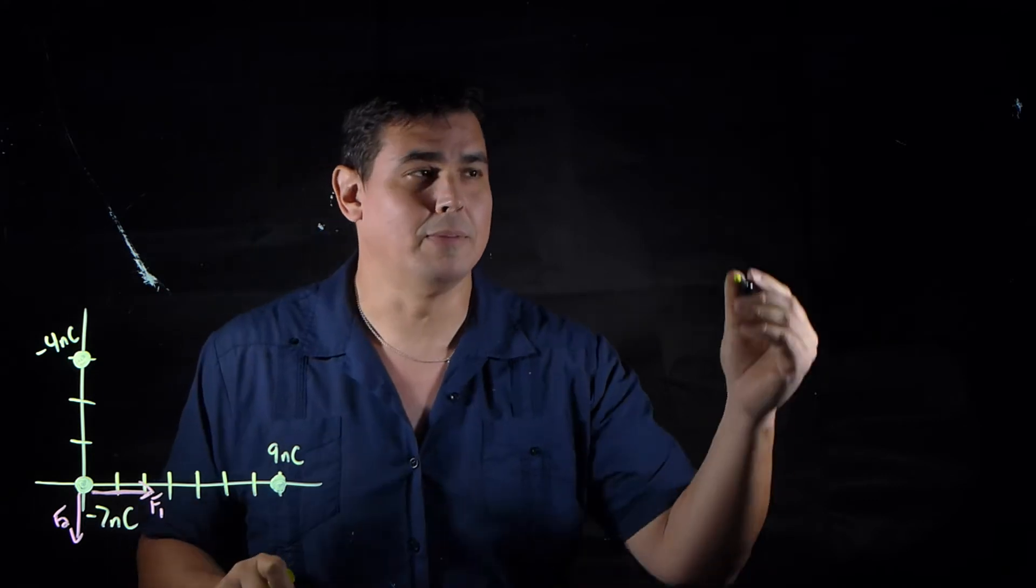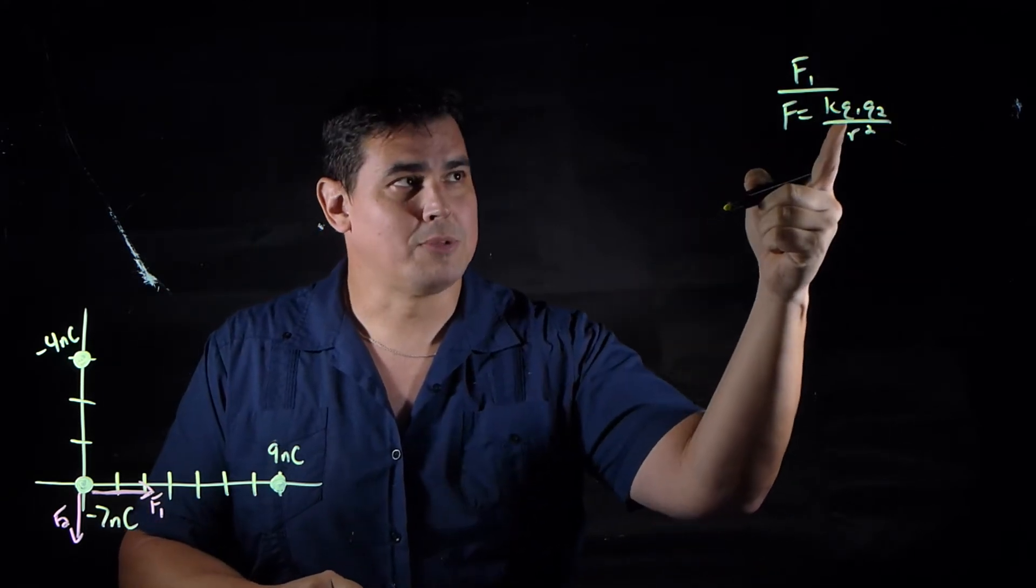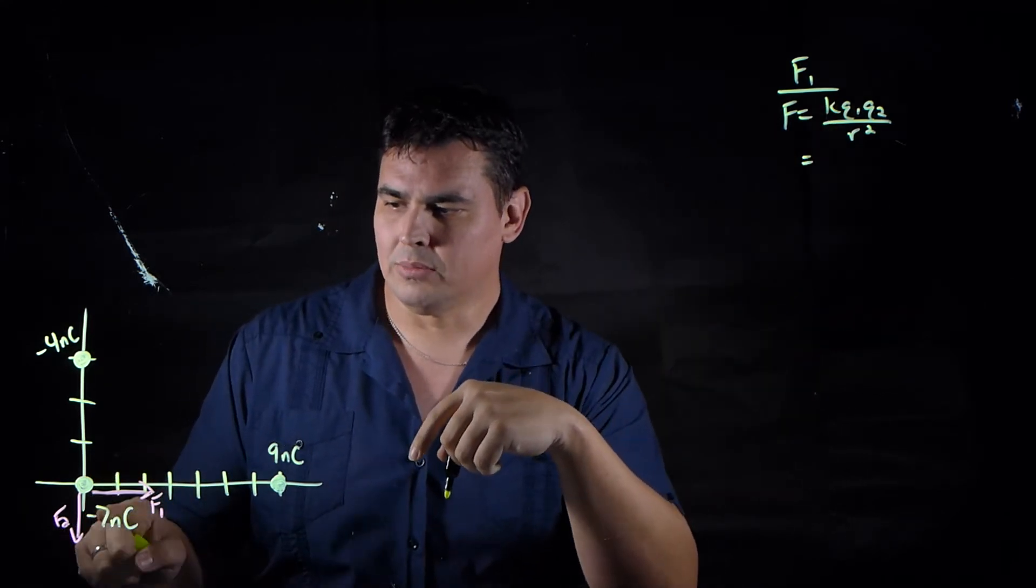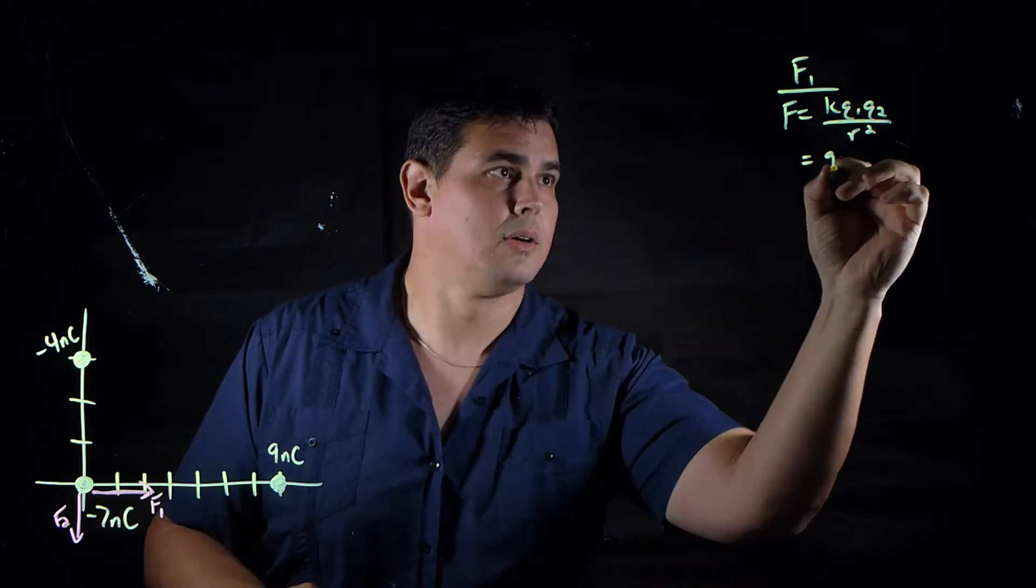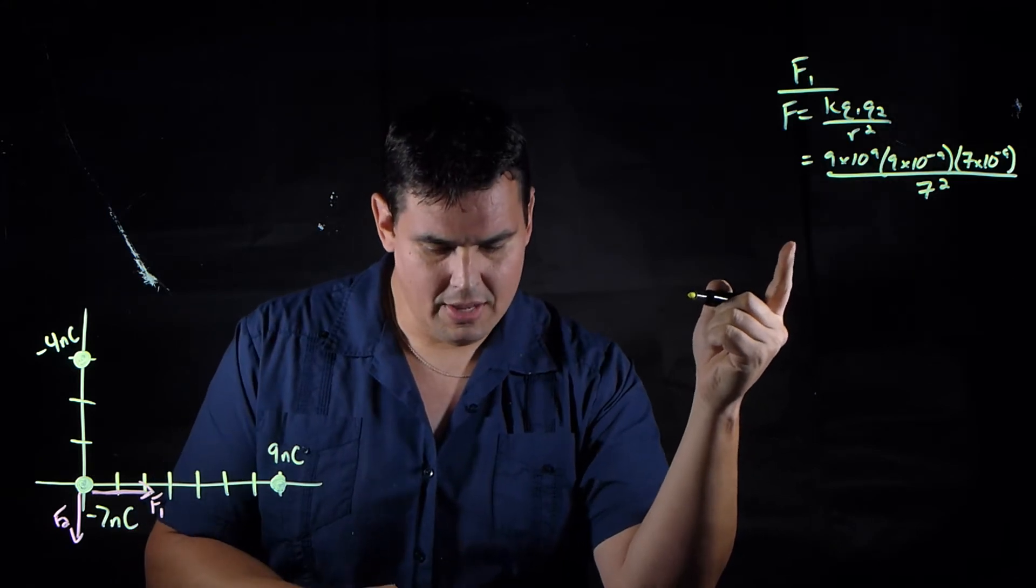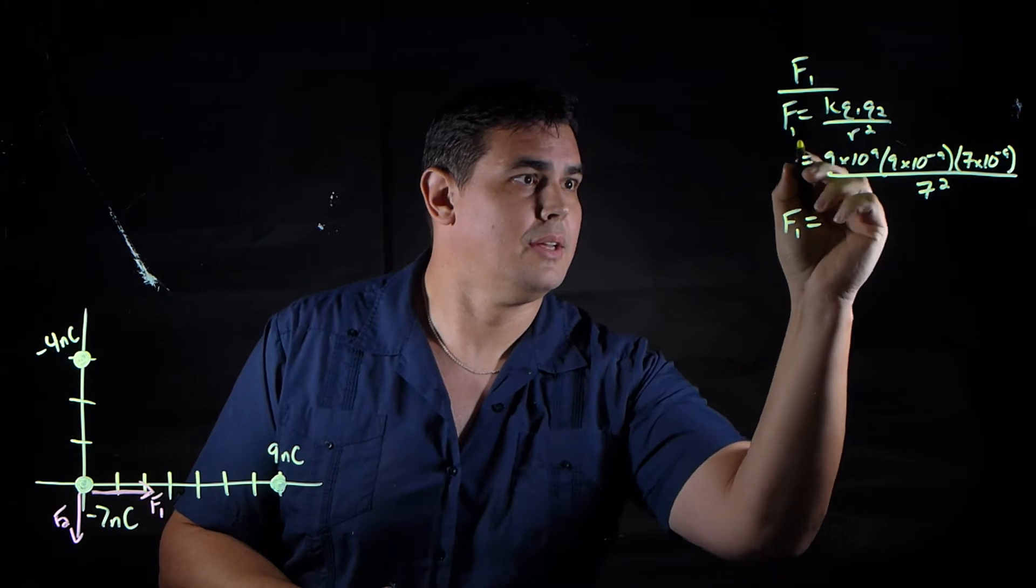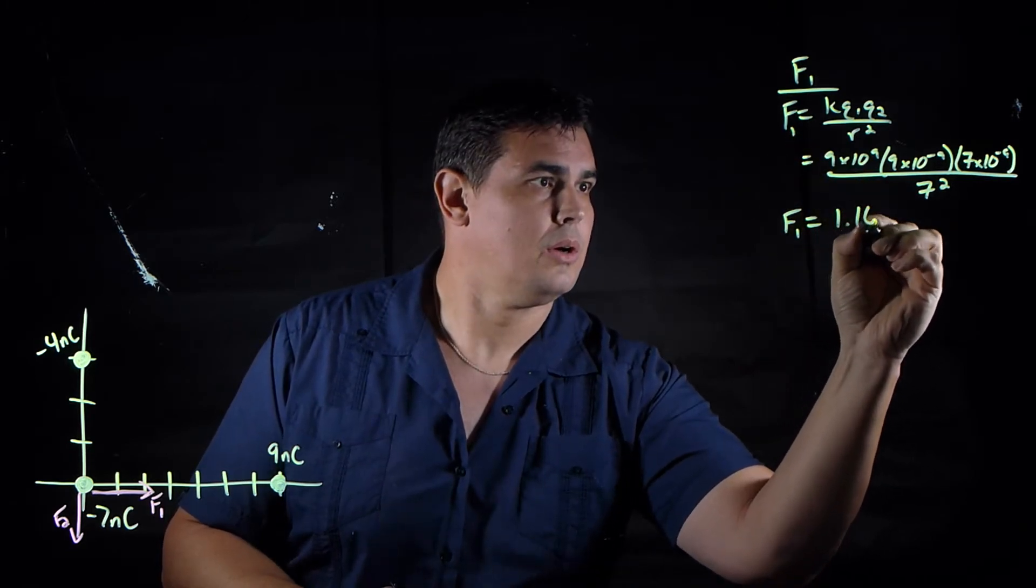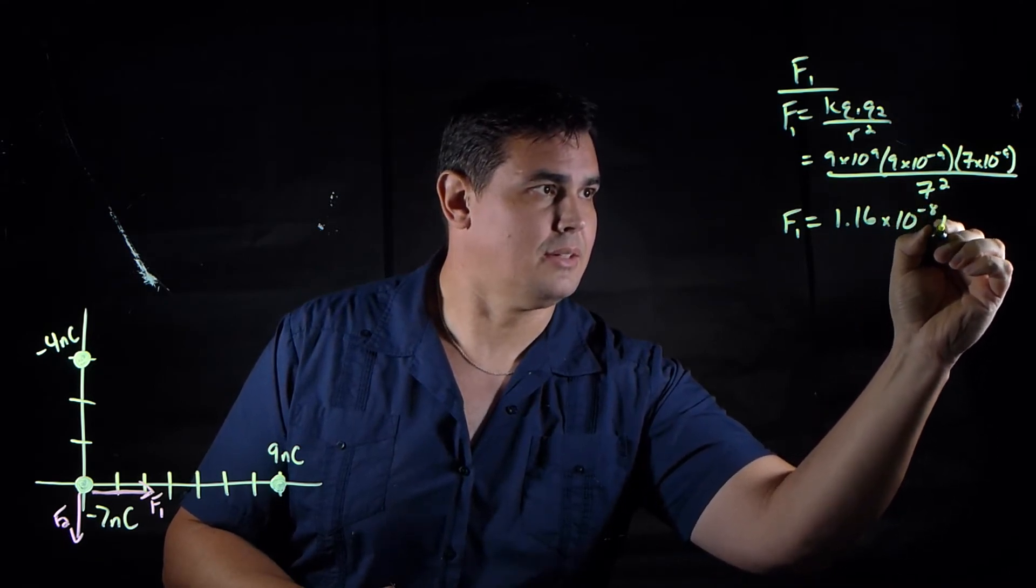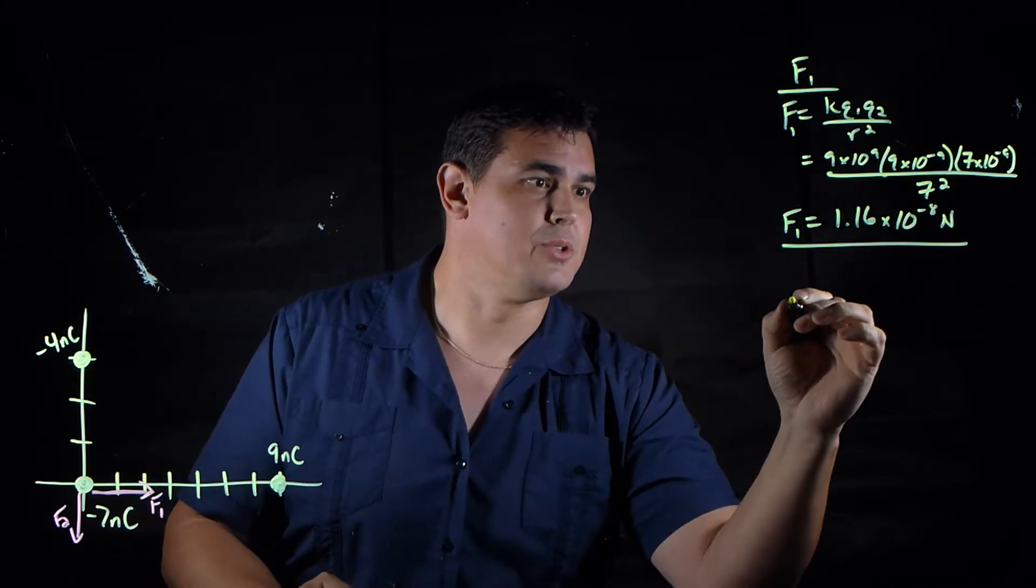Okay, so the first thing we need to do is figure out how big these two forces are, and that's pretty straightforward—just use Coulomb's law. For F1, I'm going to use Coulomb's law. I'm just going to plug in the values that I know: k, and then q1 I'll use this and q2 I'll use this charge. If I take this and I solve, I get F1 is equal to 1.16 times 10 to the minus 8 newtons.